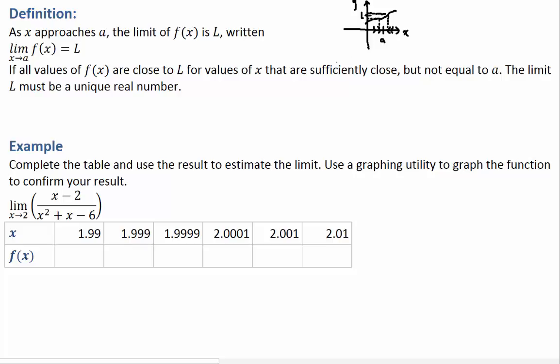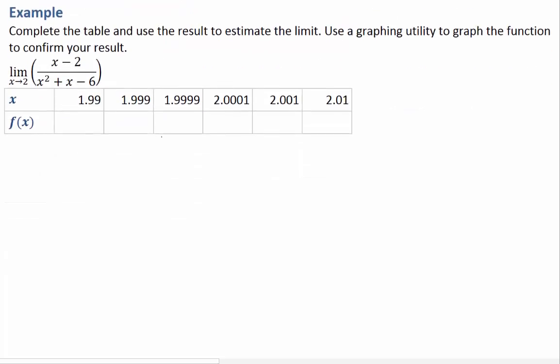As you come closer and closer to a, you're going to get closer and closer to L. My graph is horrible, I agree. Let's try to do it with an example. Let's look at this function here: x minus 2 divided by x squared plus x minus 6.